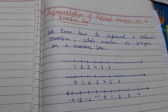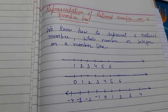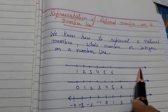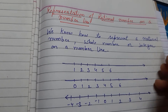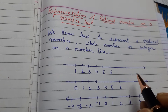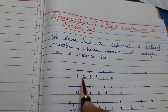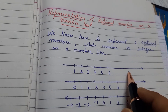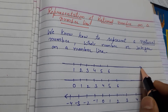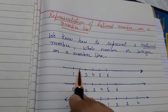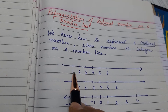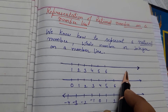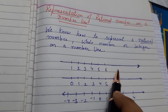First of all, we know how to represent a natural number, a whole number, or an integer on a number line. If I am taking a number line and I want to represent the natural number, natural numbers start from 1. So it will be a line that will increase towards only the right hand side, and we can represent the numbers 1, 2, 3, 4 and so on — the natural numbers on a number line with equal distances.